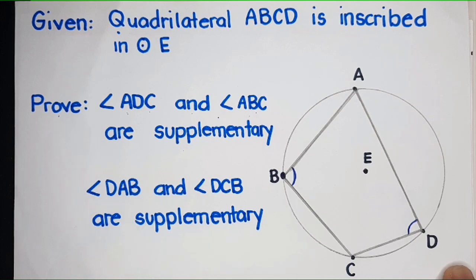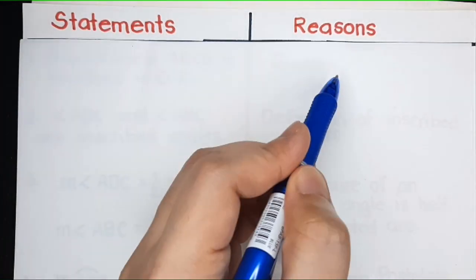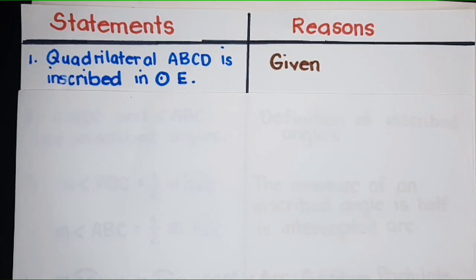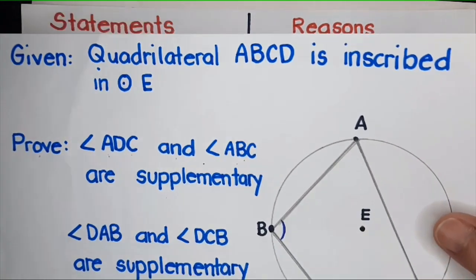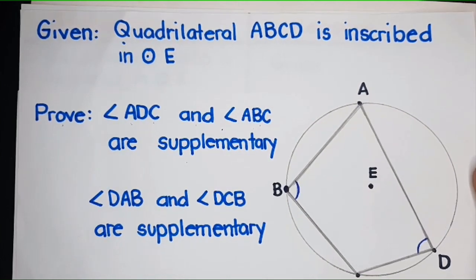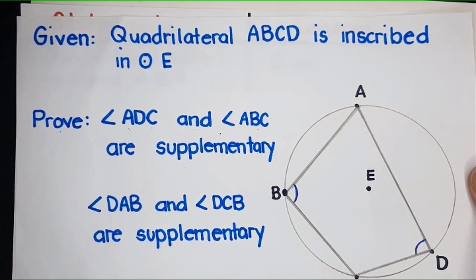Let's start proving using the two-column approach. In the two-column approach, on one side you have statements and on the other side you have reasons. Statement number one: quadrilateral ABCD is inscribed in circle E. The reason is: given. Yun ang pinakamadali sa two-column approach — the given.